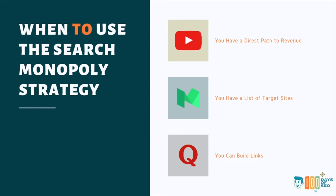Here's when to use the search monopoly strategy. Platforms like YouTube, Medium, and Quora are really the main ones to use here. Number one: you have a direct path to revenue — getting this placement and ranking number one for this term is a revenue driver. This will drive people not just through the link, but also when you're on this other website, people will click through and become customers.